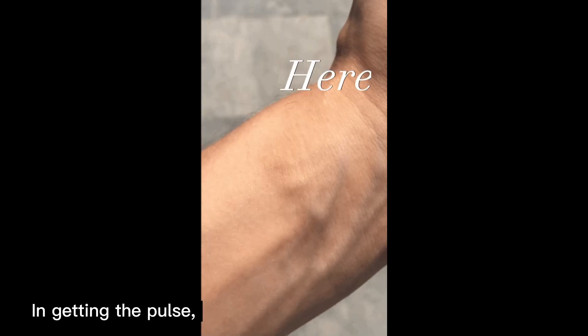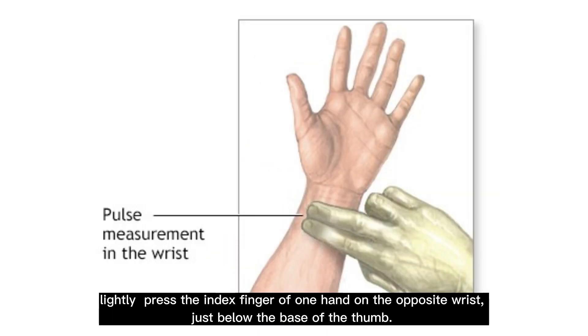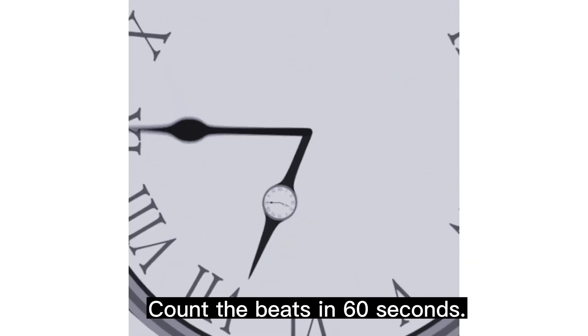In getting the pulse, lightly press the index finger of one hand on the opposite wrist just below the base of the thumb. Count the beats in 60 seconds.